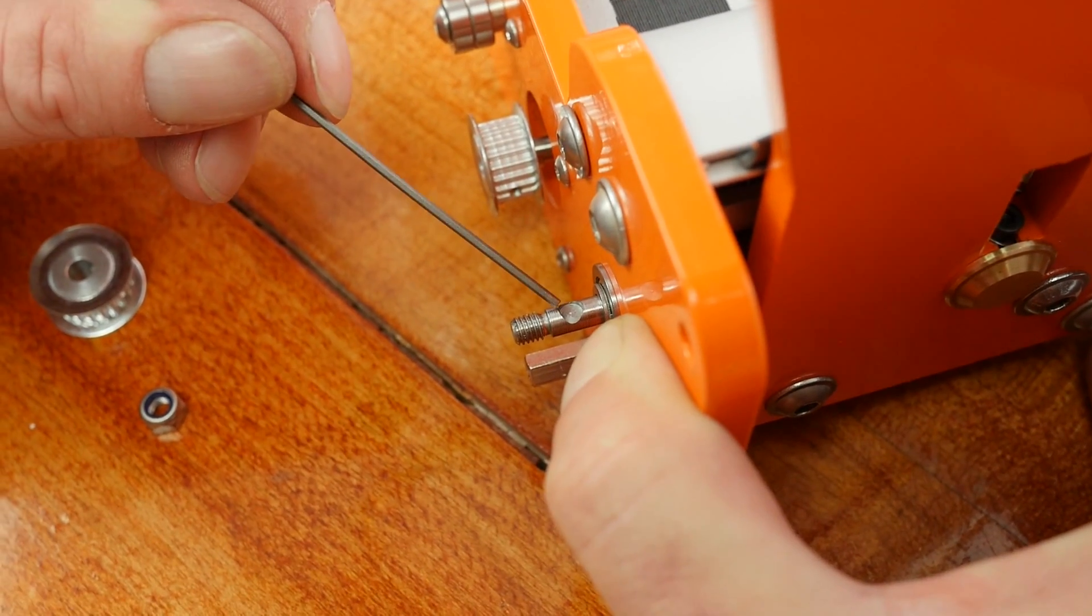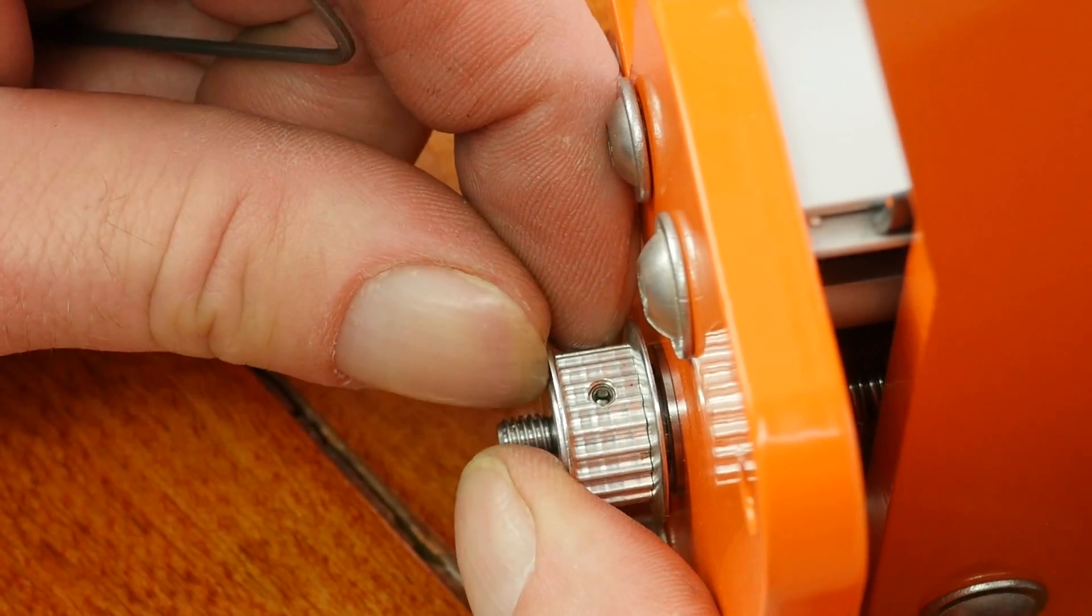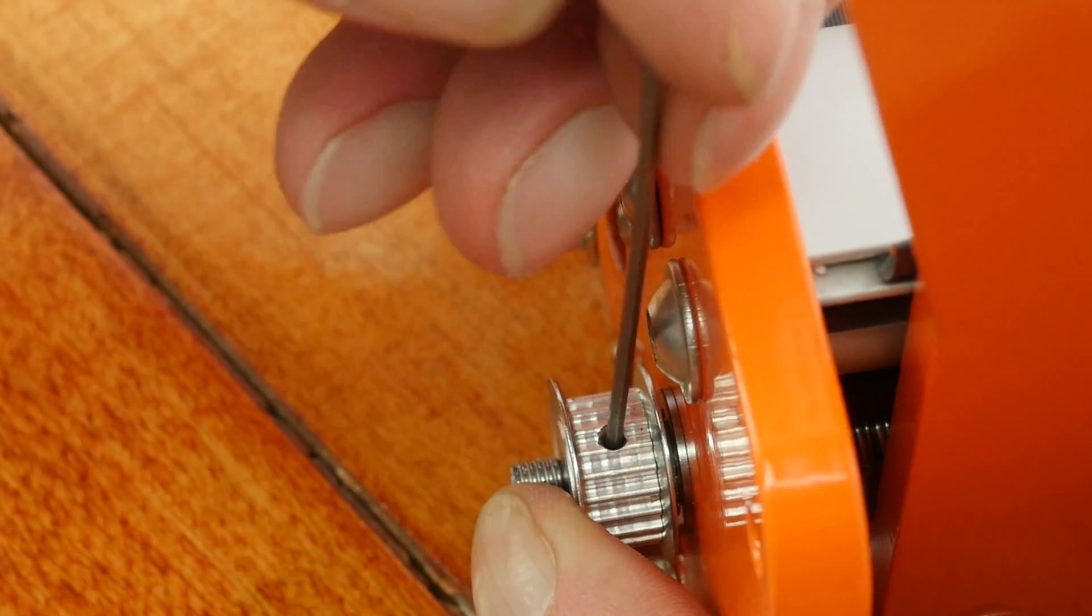Notice the flat spot on the lead screw. This is where the set screw, pictured here, needs to contact. Only lightly tighten this set screw.